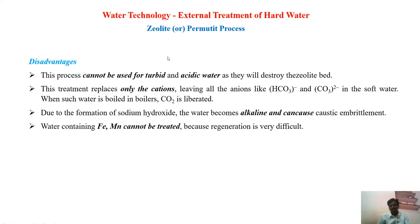In summary: zeolites available naturally are called zeolites; those prepared in the laboratory are called permutit — and permutit has higher efficiency. Hard water is passed through the zeolite bed where sodium ions exchange with calcium and magnesium ions. After all sodium ions are exhausted, the bed is regenerated by washing with 10% NaCl (brine), which restores the sodium ions so the zeolite bed can be reused again and again. The advantages and disadvantages have been discussed above.